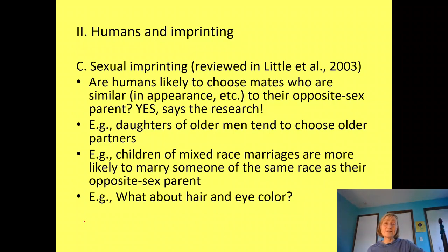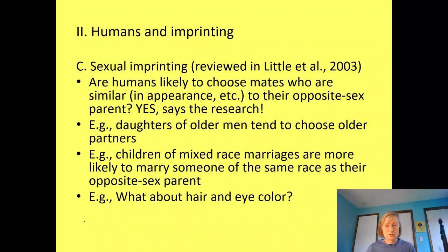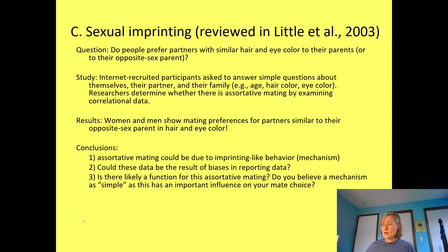Here's some evidence. Daughters of older men tend to choose older partners. Children of mixed-race marriages are more likely to marry someone of the same race as their opposite-sex parent. A recent internet study had close to 700 participants answer survey questions about the hair and eye color of themselves, their partners, and their family members. The question was: do people prefer partners with similar hair and eye color to their opposite-sex parents?